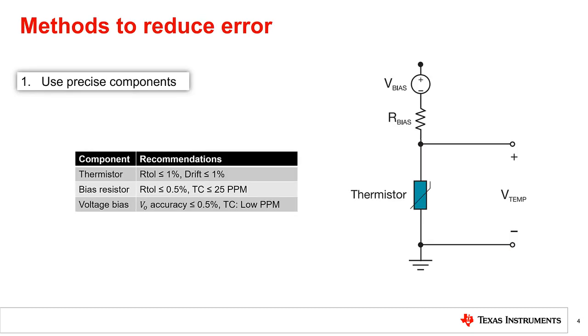The first design consideration is to use precise components in your circuit. Do not make the mistake of assuming that the thermistor is the only error source contributing to the total solution temperature accuracy. For example, if using a voltage divider circuit configuration, we recommend to pay attention to the drift and tolerances of the thermistor, bias resistor, and voltage source.